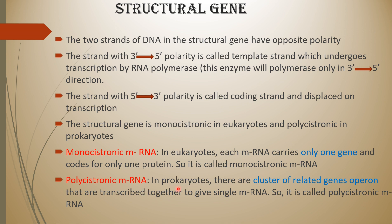In prokaryotes, the structural genes are polycystronic. Not a single gene, but a cluster of related genes — called operons — are transcribed together to form a single mRNA. So polycystronic mRNA means one mRNA consists of a cluster of related genes. To summarize: monocystronic means each mRNA carries only one gene and codes for one protein, as in eukaryotes; polycystronic means a cluster of related genes (operons) are transcribed to give a single mRNA, as in prokaryotes.